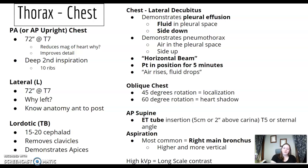Oblique chest: the 45-degree oblique is for localization. A little bit steeper — that 60-degree — is for the heart shadow. When we use AP supine chest x-ray, you might be looking for an ET tube if the patient was just intubated. The ET tube should be 5 cm or 2 inches above the carina, at T5 or the sternal angle. Boards uses centimeters, so make sure you're viewing centimeters.